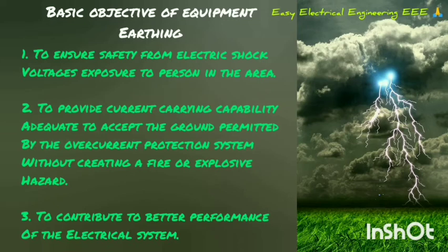What are the basic objectives of equipment earthing? First, to ensure safety from electrical shock voltages exposed to persons in the area. Second, to provide current carrying capability adequate to accept the ground fault current permitted by the overcurrent protection system without creating a fire or explosion hazard. Third, to contribute to better performance of the electrical system.